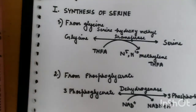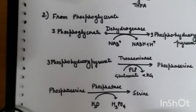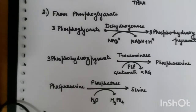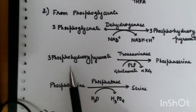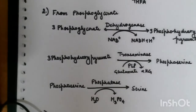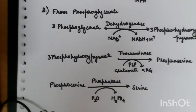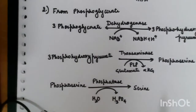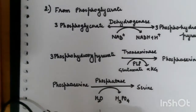Then we talk about synthesis of serine from 3-phosphoglycerate, which is the major source of serine in the body. 3-phosphoglycerate is converted into 3-phosphohydroxypyruvate in the presence of enzyme dehydrogenase; NAD+ is reduced into NADH + H+. Then, 3-phosphohydroxypyruvate is converted into phosphoserine by enzyme transaminase and coenzyme PLP (pyridoxal phosphate), where glutamate is also converted into alpha-ketoglutarate. Finally, phosphoserine is converted into serine by enzyme phosphatase, releasing H3PO4.